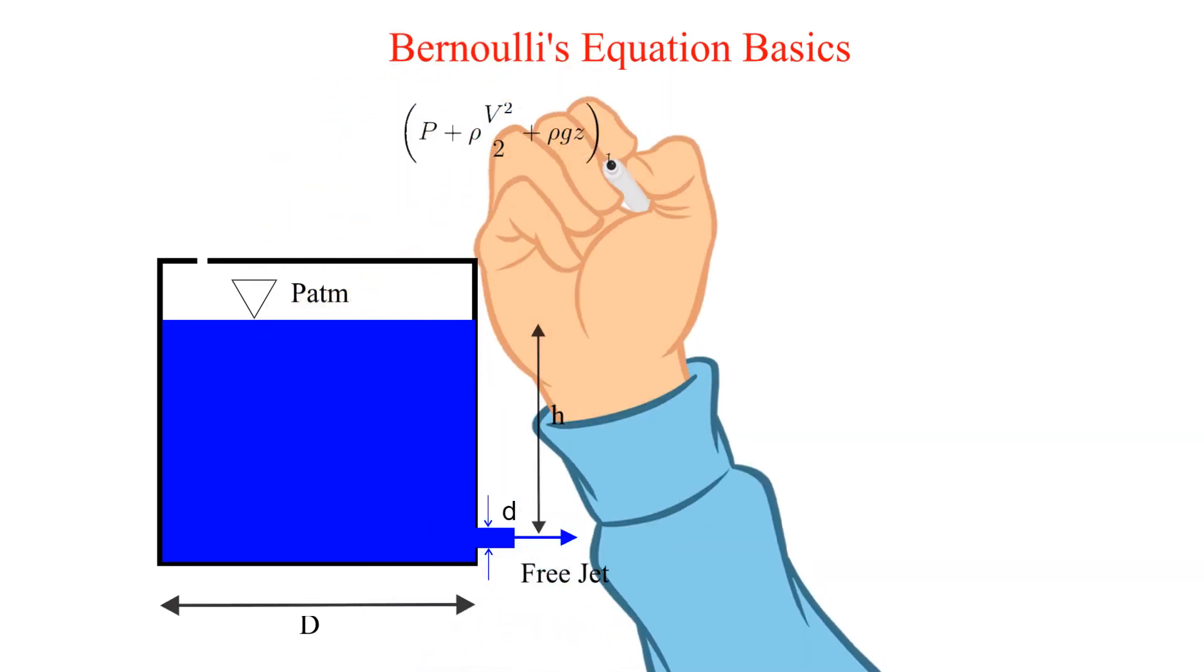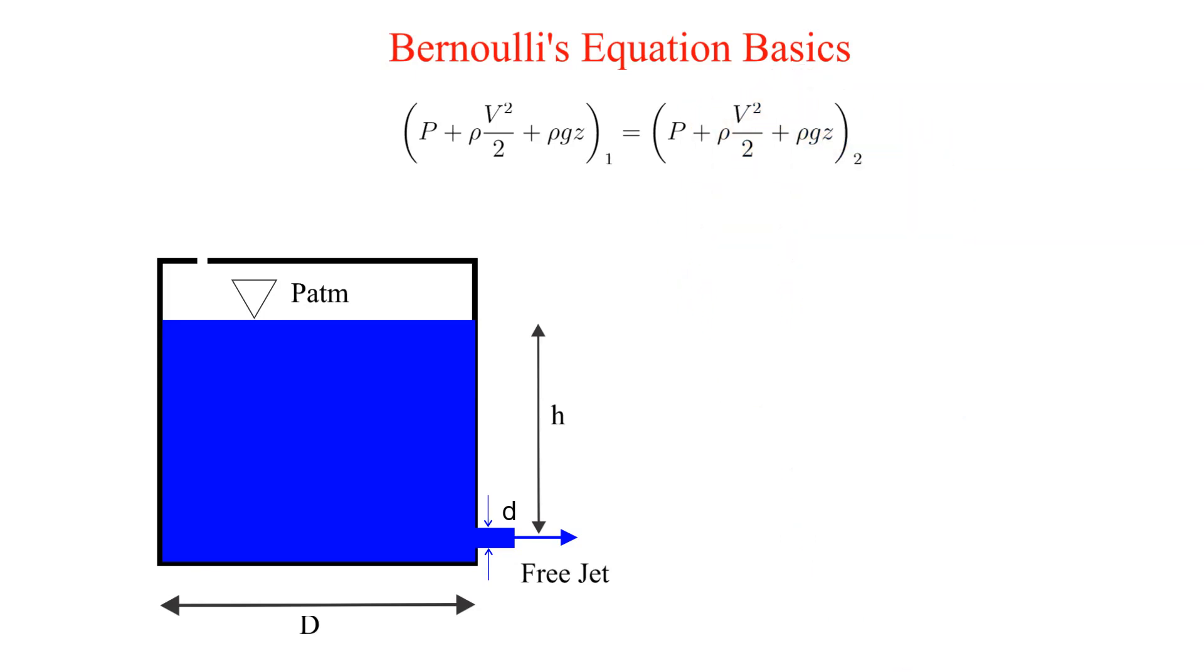Before we get started, please note the standard symbol used to denote a free surface. It is a downward pointed triangle. We are seeking the velocity of the free stream issuing from the bottom of the tank. That will be one of the points we choose in the application of Bernoulli's equation. In this example it is denoted as point 2.